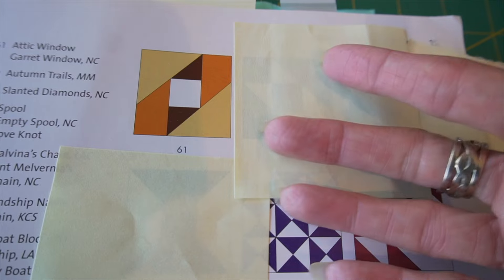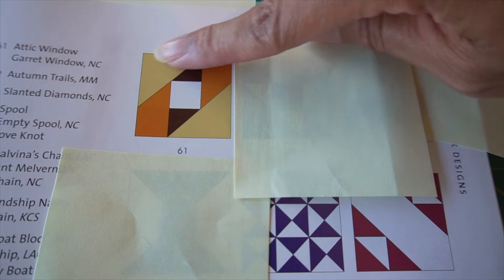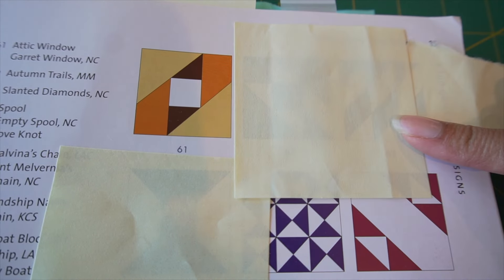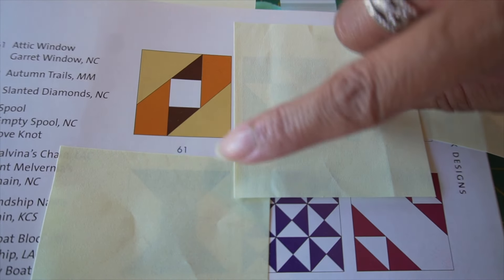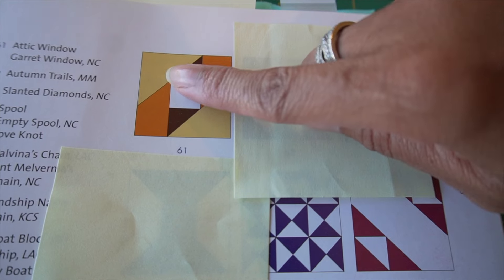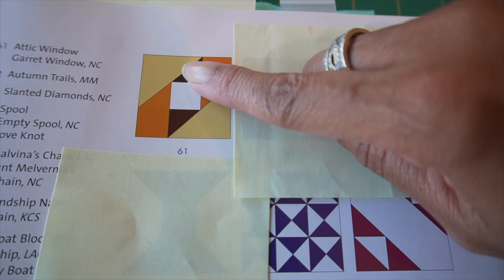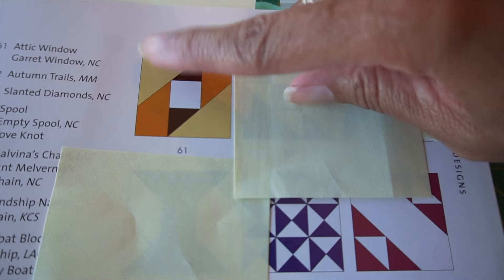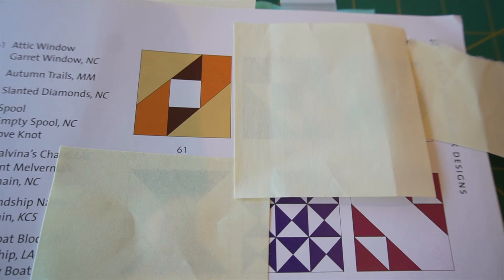However, when I convert this over to the AccuQuilt dies from the mix and match set, these larger half-square triangles are not included. So part of my translation process will be to take these two larger half-square triangles and break them down. As you can see here, if I draw a line there, that would be a half-square triangle. And if I draw a line there, that'll be a half-square triangle. And this will be a regular square. So let me show you which dies I'll be using as well as the fabric I selected. Stay tuned!